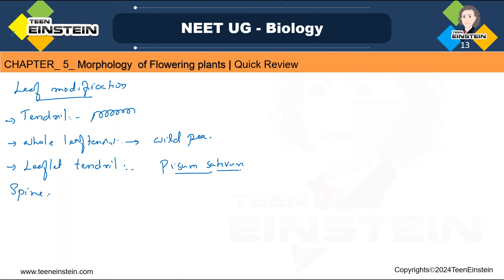Another type is spine — the whole leaf or parts of leaf get modified into spine, for protective function or preventing excess loss of water or transpiration. Example: Opuntia — the whole leaf is modified; in Acacia, stipules form spines. Succulent — leaves become fleshy and thickened to retain water in hot or arid climates. Examples: Aloe vera, Bryophyllum.